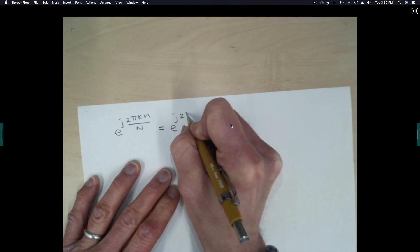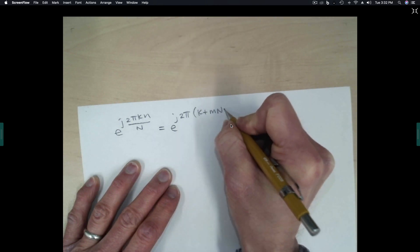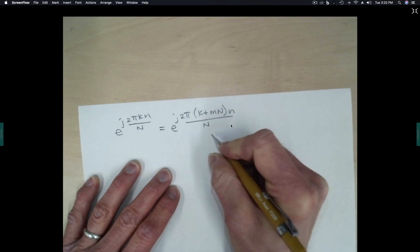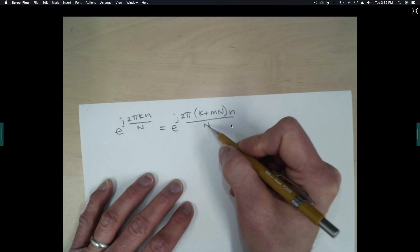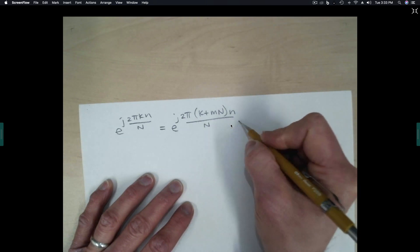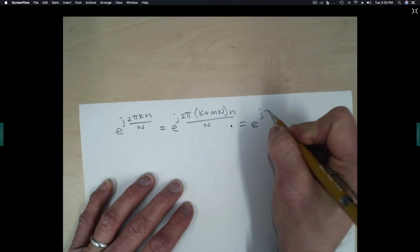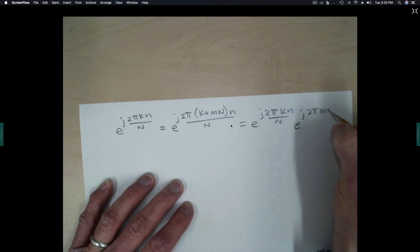So this is equal to e to the j 2 pi k plus m times capital N over N. And that's pretty easy to see because if we separate this into two exponentials, we see that in the piece where this fact distributes across, we could just write it e to the j 2 pi k n over n, and e to the j 2 pi m n times big N divided by n. This piece here is equal to 1, and so it hasn't changed the value.